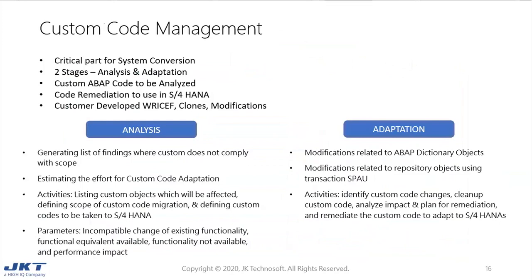Custom code management is collectively part of preparation and semantical adoption. It is a very critical part of the system conversion process, done in two stages: analysis and adaptation. In analysis, we generate a list of findings where custom code does not comply with scope, and we estimate the effort of custom code adaptation. Typical activities include listing affected custom code objects, defining scope, and identifying parameters such as incompatible changes to existing functionality, functional equivalents available, functionality not available, and performance impact. In adaptation, we adapt modifications related to ABAP dictionary objects and repository objects along with SPDD/SPAU.